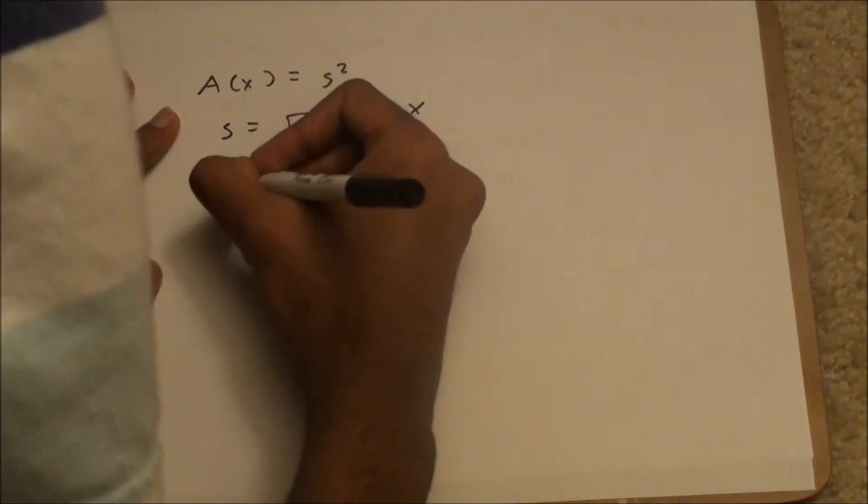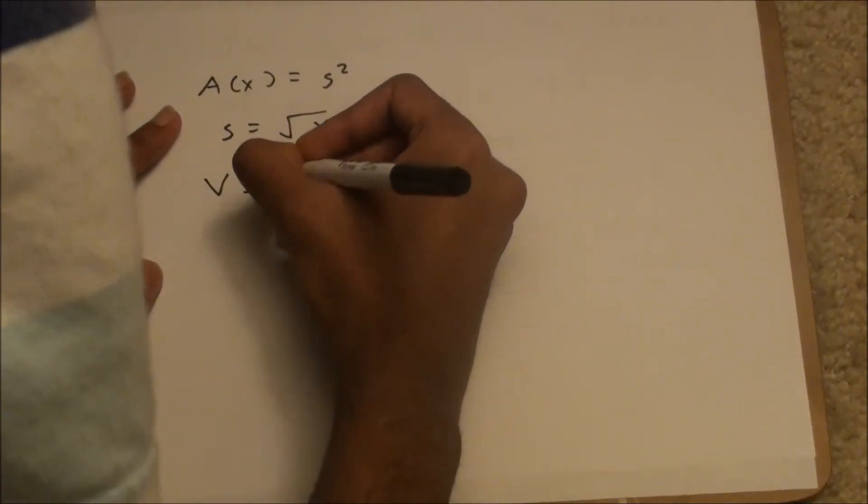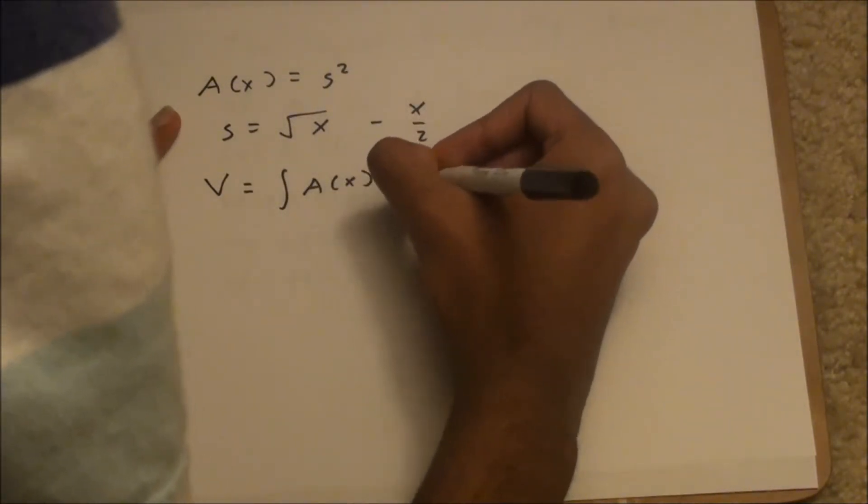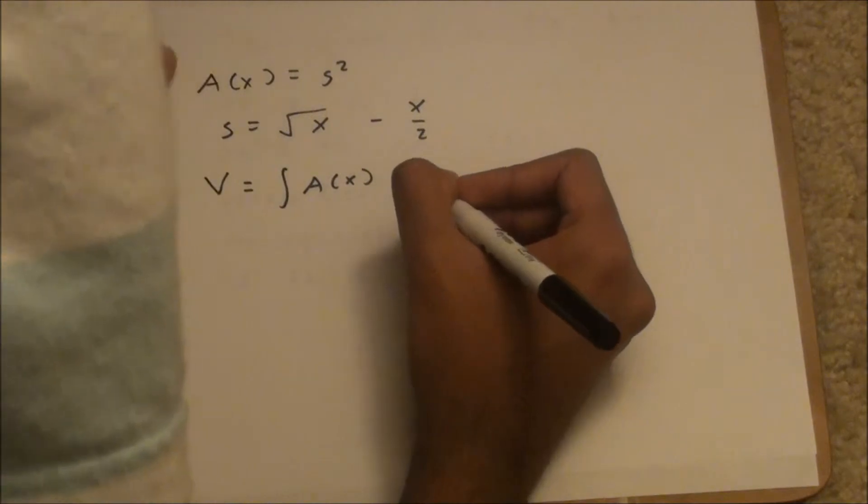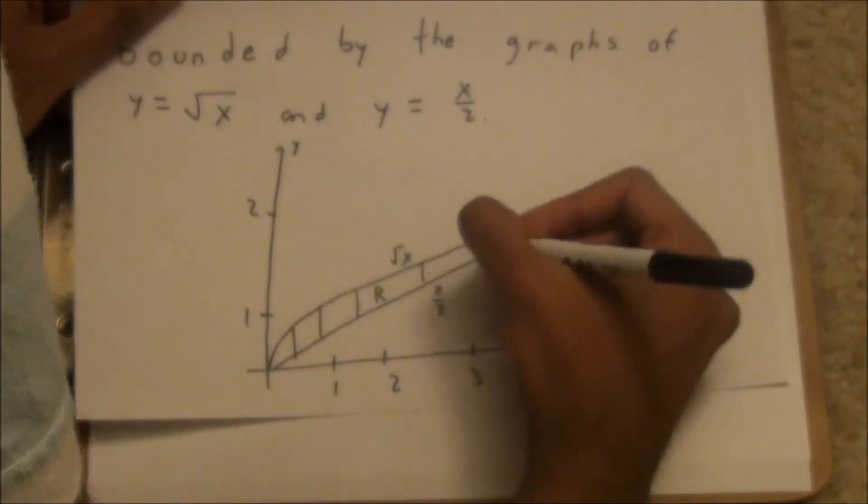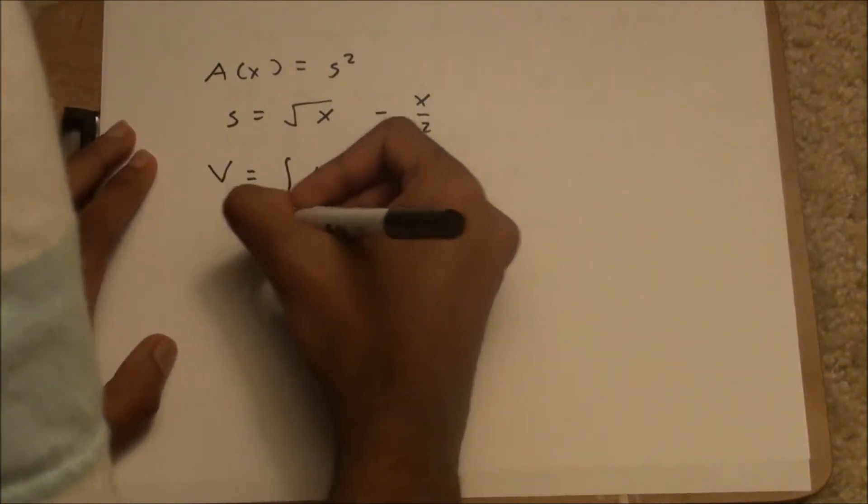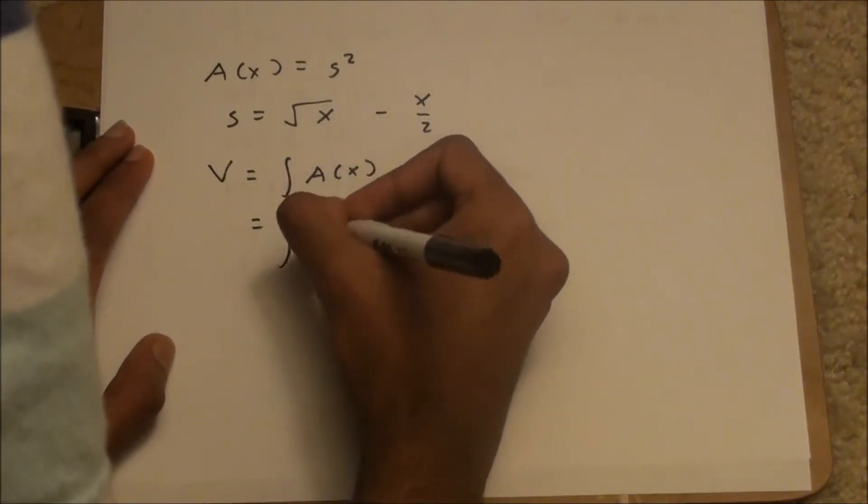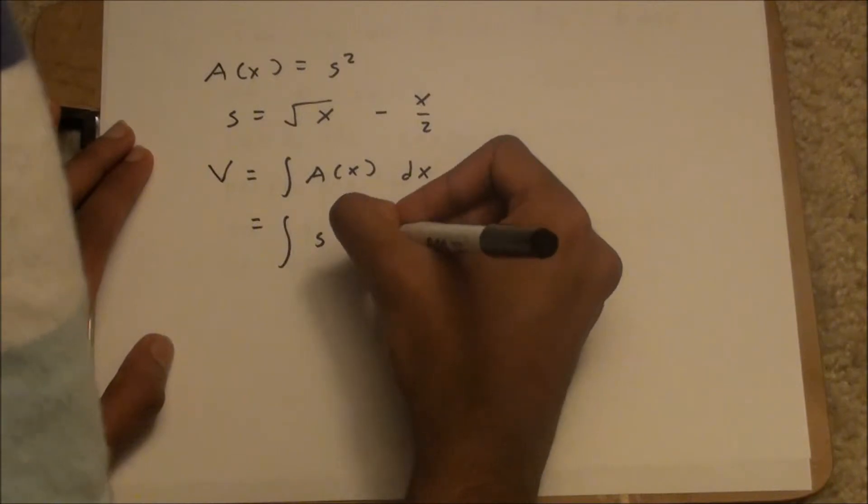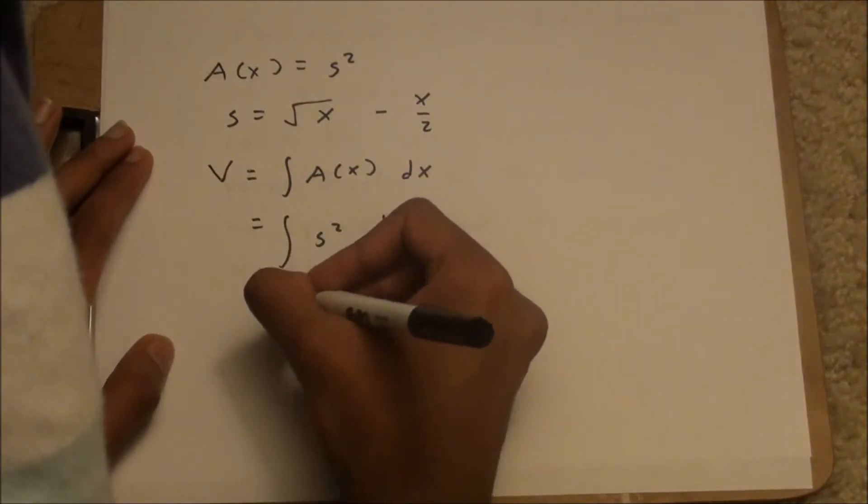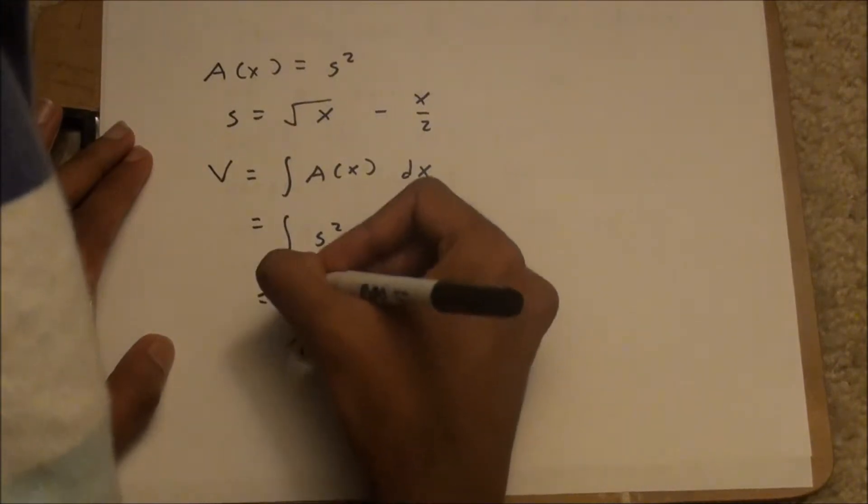To find the volume of the solid, it's just the integral of the area function with respect to x, since it's vertical cross-sections. And if we put our function here, s squared dx, we put all of our information from 0 to 4 again.